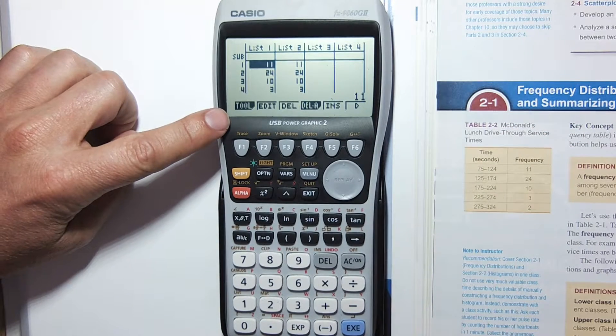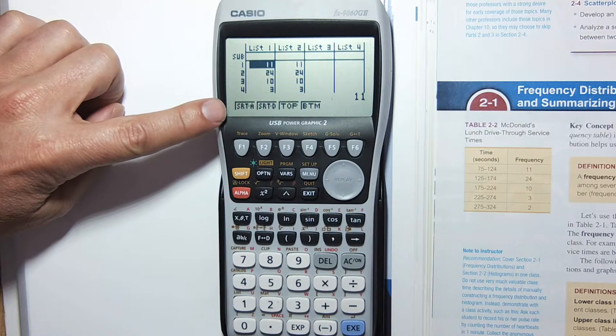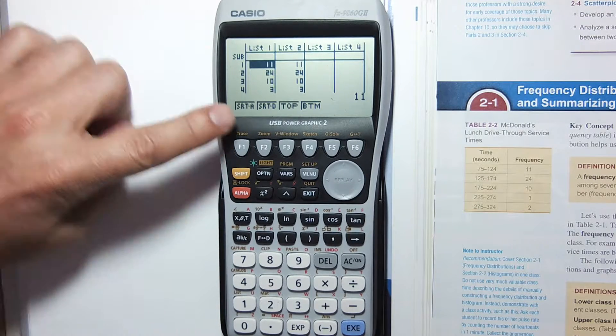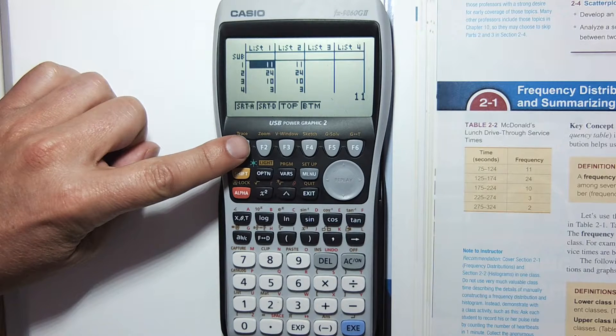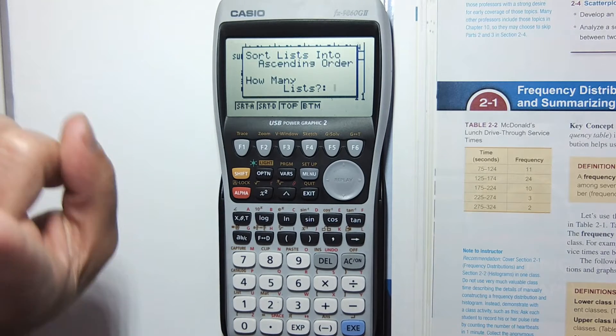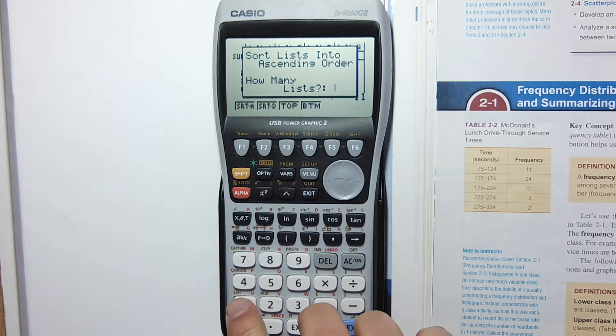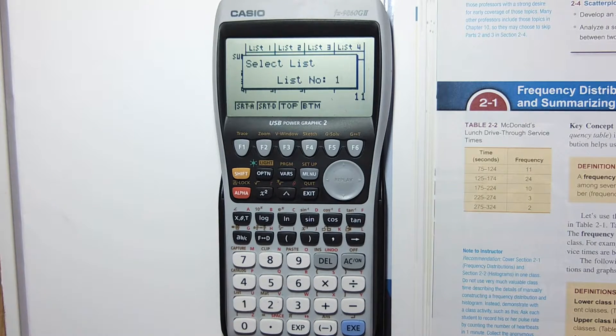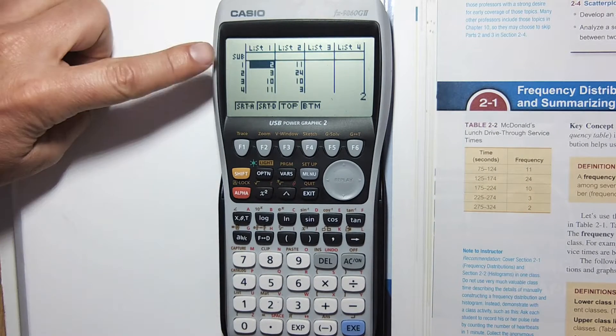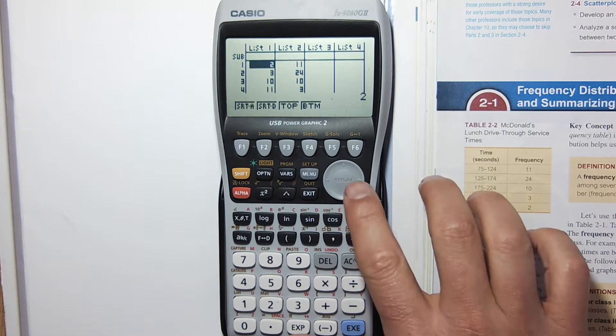You can see I can sort it in ascending order or descending order, which would be the opposite. I'll choose ascending order, F1. I'm going to list 1 and specifically list number 1. You can see it's arranged from the smallest to the largest number.